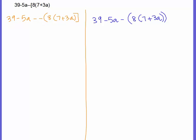So first, we're going to rewrite 39 minus 5a. Okay, a double negative makes one positive. And then parentheses, 8 times 7, then you get 56. 8 times 3, then you get 24, and you have an a.